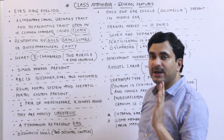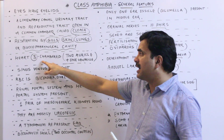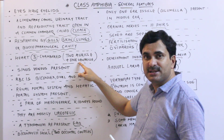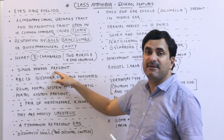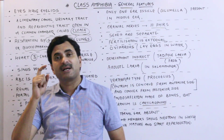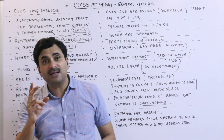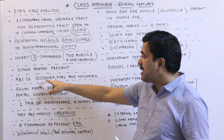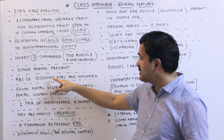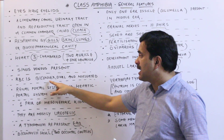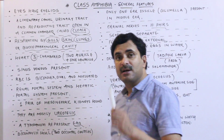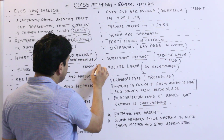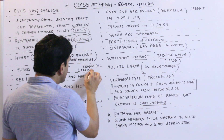The heart is three-chambered, with two auricles and one ventricle. The sinus venosus is present and well developed, opening into the right auricle. The RBC of amphibians is biconvex, oval, and nucleated. The largest RBC in the entire animal kingdom belongs to this class — for example, the Congo eel.